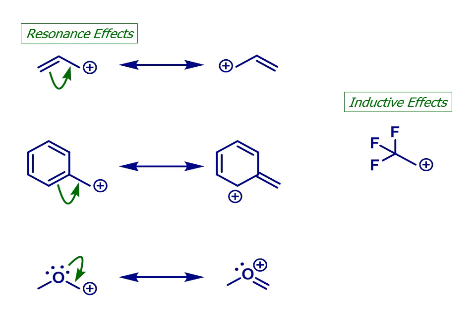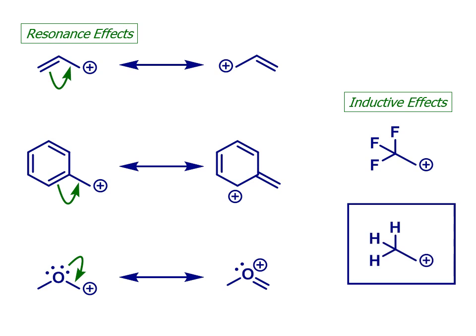It also follows that inductive effects can stabilise or destabilise carbocations. In this example on the right of the slide, the presence of three highly electronegative fluorine atoms on the carbon next door to the C+ will pull electron density away from the already electron-deficient centre, and destabilise that carbocation compared to the equivalent species which doesn't have the fluorines.